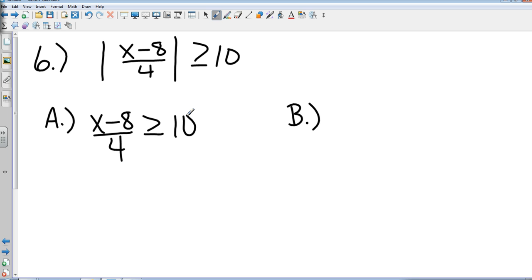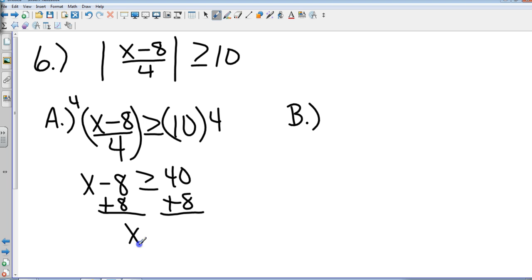Alright. Anybody, first step. Josh. Multiply each side by 4. So that gives me x minus 8 greater than or equal to 40. Final step, anyone? Add 8. Add 8 to both sides. So x is greater than or equal to 48. How many got that? Good. I like that. Lots of hands.